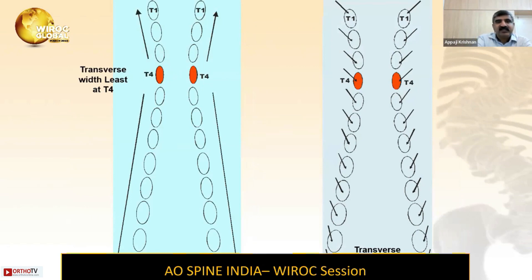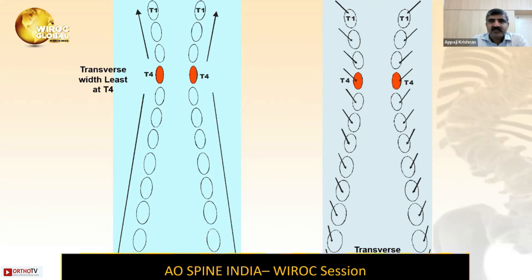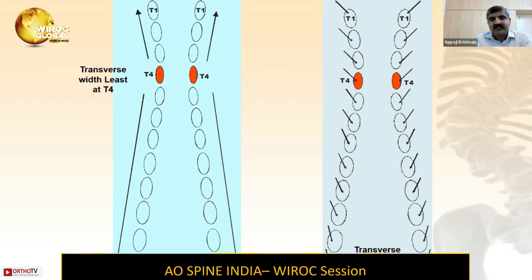The second important point is the transverse width of the pedicle, which determines the size of screw to be inserted. The screw diameter in the adult population is normally 5.5mm in the upper thoracic spine. Below T9-T10, I tend to use 6.5mm. I do not use 4.5mm even in the upper thoracic spine because there is a slight give in the pedicle and you can safely put in a 5.5mm screw. The transverse width is least at T4 and widest at T12. As we go up from T4 — T3, T2, and T1 — the pedicles are wider and easier to insert, with an angle of insertion of nearly 25 degrees.